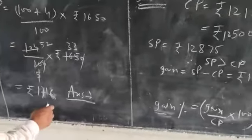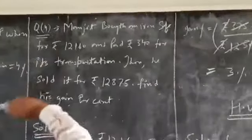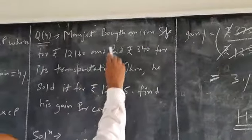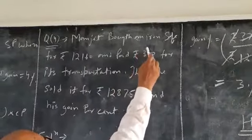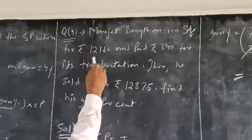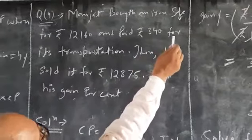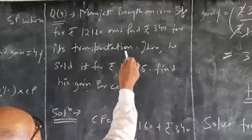Question number 4. Manjit bought an iron safe for Rs. 12,160 and paid Rs. 340 for its transportation.